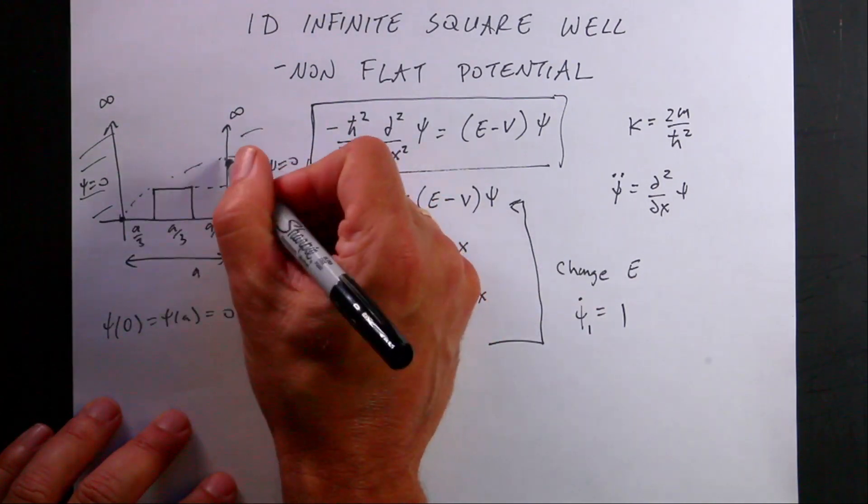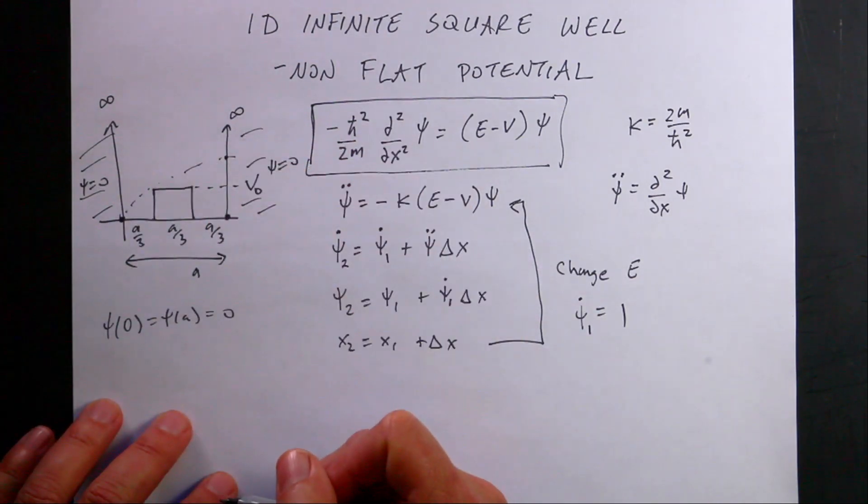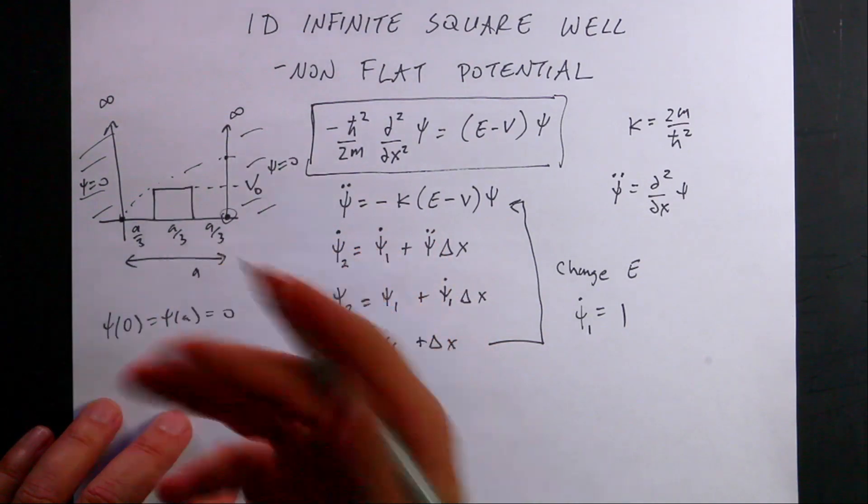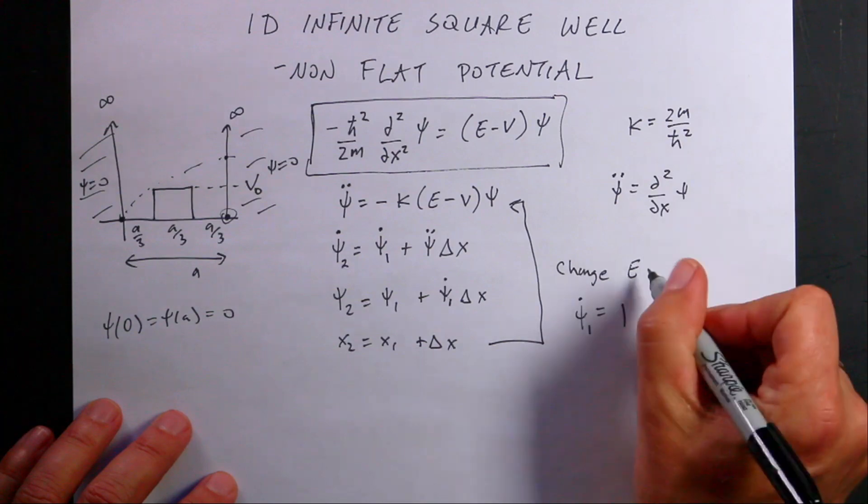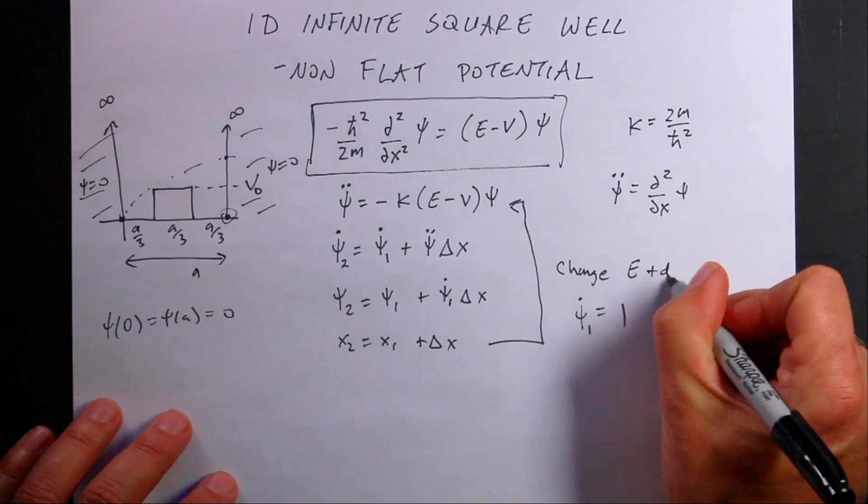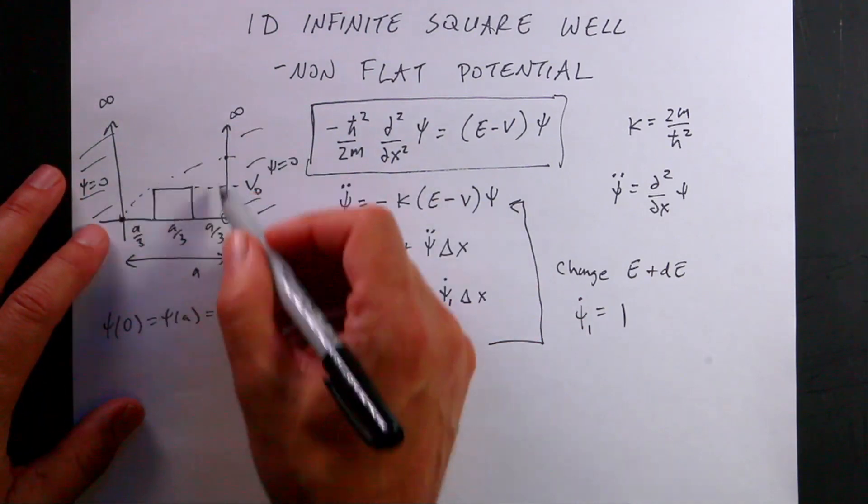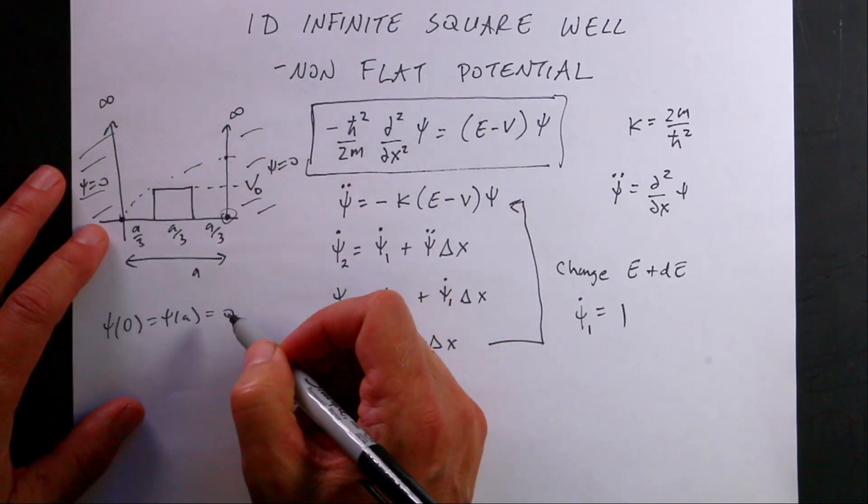If that wave function is close to zero then it works. If it's not then I need to change E by some amount, E equals E plus dE and then do it again. That's why the shooting method. So I keep on shooting to find this value.